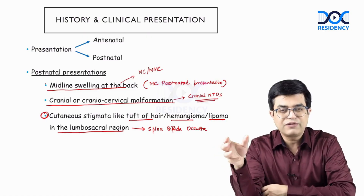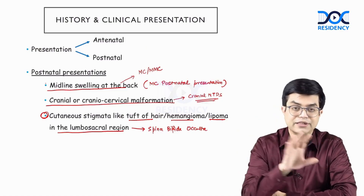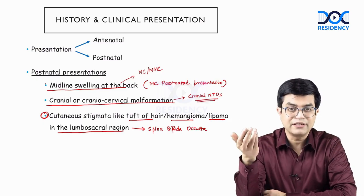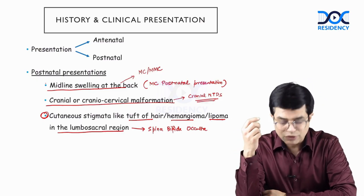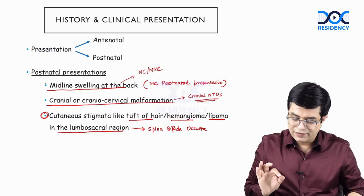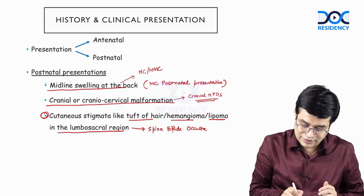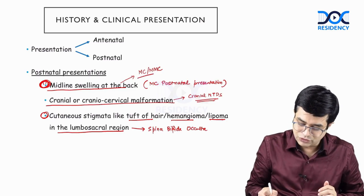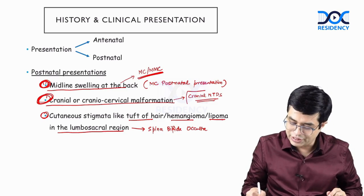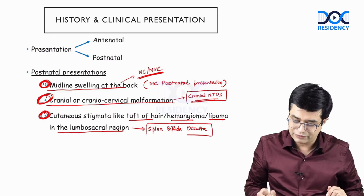Then you have the caudal neural tube defects, which include meningocele and spina bifida occulta. Spina bifida occulta is absolutely asymptomatic and its exact prevalence is difficult to ascertain — it is found in the general population. You also have meningomyelocele, which is the case we are discussing. In a neural tube defect patient, you will have three types of presentation: midline back swelling suggesting meningocele or meningomyelocele, cranial malformation suggesting cranial neural tube defect, and cutaneous stigmata suggesting spina bifida occulta.